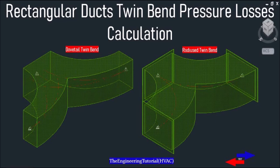Hi there, and welcome to our YouTube channel. Today we're going to be talking about the types of rectangular duct twin band and calculating pressure losses through rectangular duct twin band without vents, based on the airflow, air velocity, and pressure. This is part one of our discussion on rectangular duct twin band.